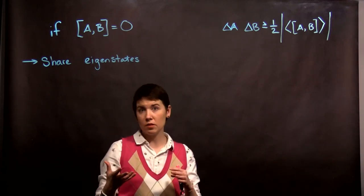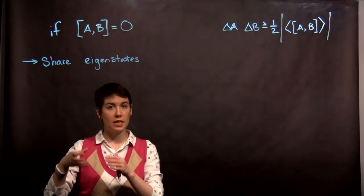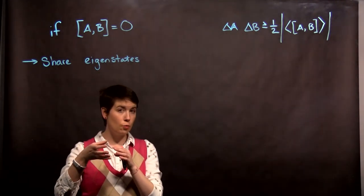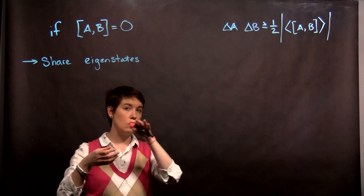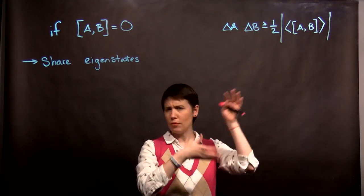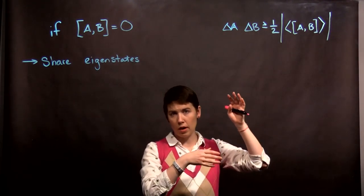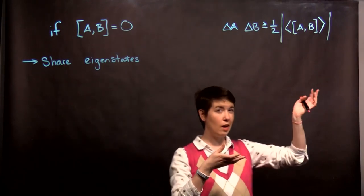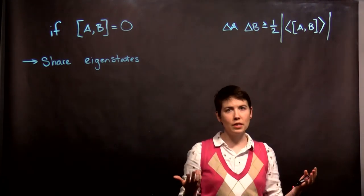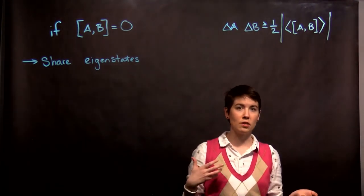And we've already seen for the spin simulation that if you measure what's happening in x, and then you pass, for instance, spin up in x onto y, you then get 50-50, up in y, down in y. And if you then pass that back onto x, either of those, you again get 50% spin up, 50% spin down in y.